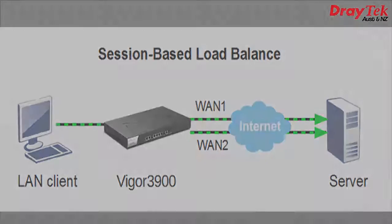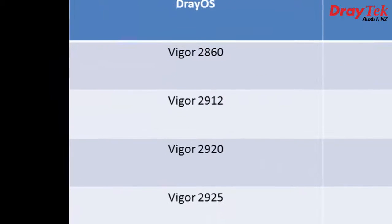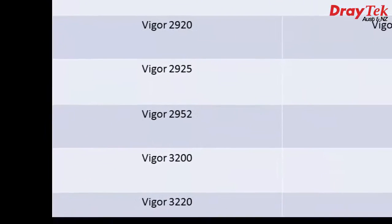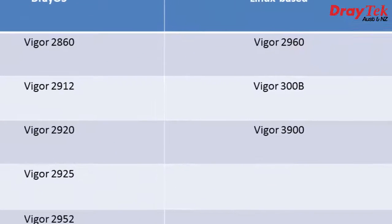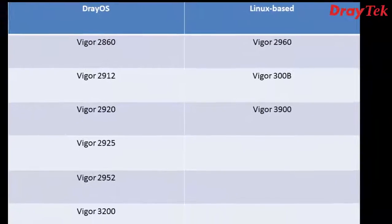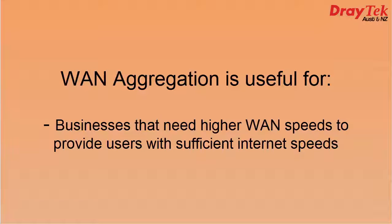WAN aggregation is supported in dual WAN and multi-WAN routers. If you have a look at this table you can see the different routers which support WAN aggregation. WAN aggregation is useful for businesses that need higher internet speeds to provide users with sufficient WAN speed.